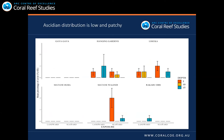We repeated the same analysis for ascidians. However, in the case of ascidians, we detected that cover was very low — less than 2% usually — and the distribution was patchy, so we were unable to test this statistically. Basically, for sponges, depth and exposure play an important role, but the effect depends on the reef. For ascidians, at least in the inshore reefs, it is very difficult to establish any clear pattern.